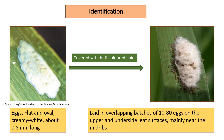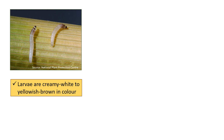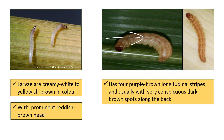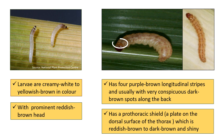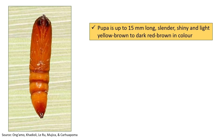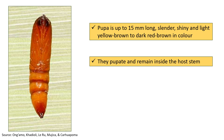Eggs are also covered with buff-colored hairs. Larvae are creamy white to yellowish-brown in color with a prominent reddish-brown head. They have four purple-brown longitudinal stripes and usually very conspicuous dark brown spots along the back, and a prothoracic shield on the dorsal surface of the thorax which is reddish-brown to dark brown and shiny. Pupae are up to 15 mm long, cylindrical, shiny, and light yellow-brown to dark red-brown in color, and remain inside the host's stem.